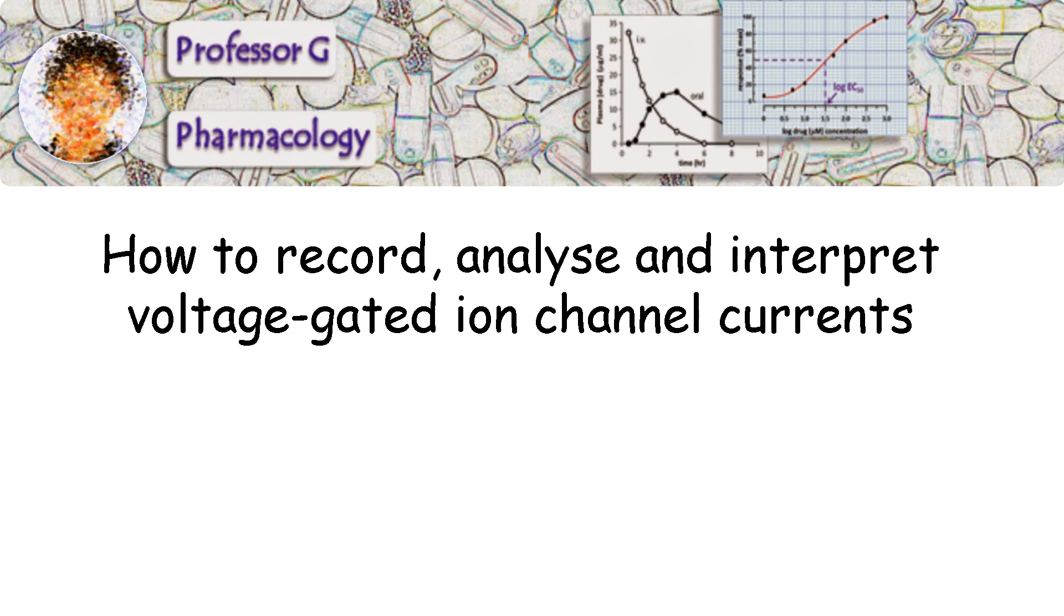Ion channel currents are measured using a range of voltage clamp techniques. In case you haven't seen my video on the methods used to study ion channels, I will begin with a brief overview of what voltage clamp is. I will then explain typical voltage protocols that are used to elicit ion channel currents and how they are measured. Features of sodium, potassium and calcium channel currents will be discussed and the concept of ion channel rectification will be explained.